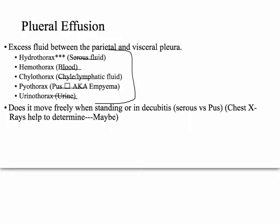Urothorax is actually very rare — it's from obstructive uropathy, and the urine will leak into the retroperitoneal space, then seep through the diaphragm and past the parietal pleura, and that's how you can get urothorax. A very rare thing, but that's how it happens — you don't have to pee on your chest.